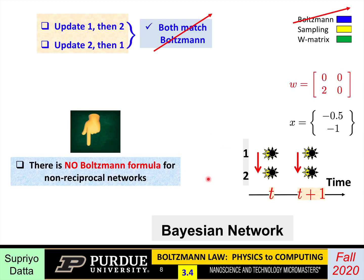Such networks are actually quite widely used. In the context of learning, directed networks are much easier to train than Boltzmann networks. In general, such networks are widely used, although this course has largely been about Boltzmann networks. In this lecture I'd like to say a few words about this type of network and the differences it makes.